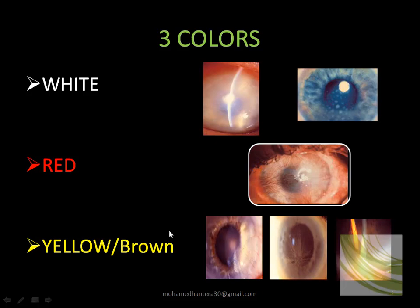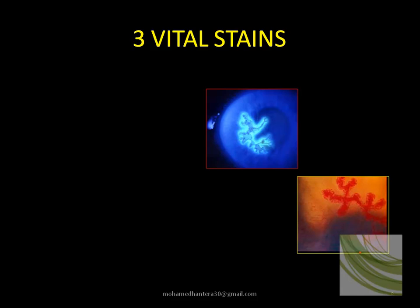Yellow or brown colors include vortex keratopathy. There is also brown pigmentation near the limbus, all around — this is the Kayser-Fleischer ring. Fleischer ring is for keratoconus, while Kayser-Fleischer is for Wilson's disease, and we will discuss this later.